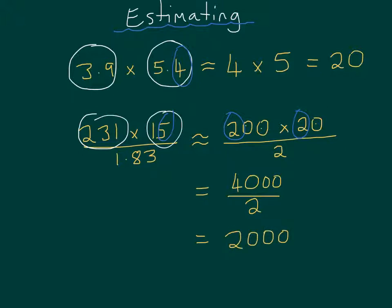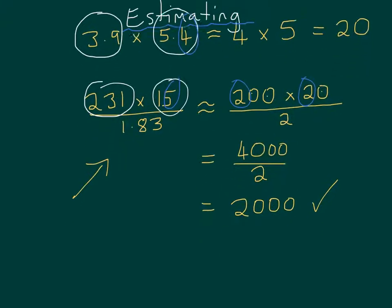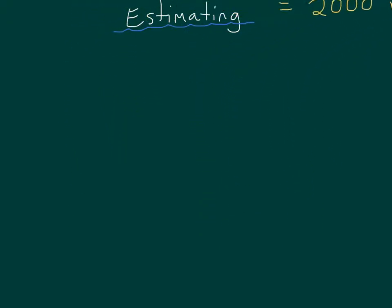So again, 2,000 is probably not going to be the exact answer to this sum here, but it doesn't matter. It's just an estimation. It will be about 2,000. A bit higher, a bit lower. I don't really know. I don't really care. It's just an estimation. It's about 2,000. Okay, I'm going to move all of this stuff out of the way, and give you a couple to try.